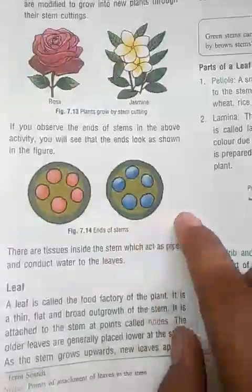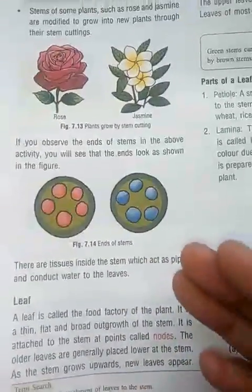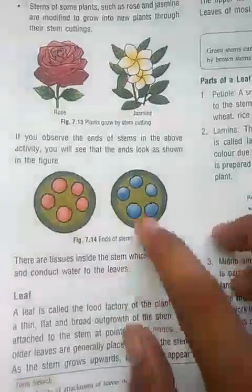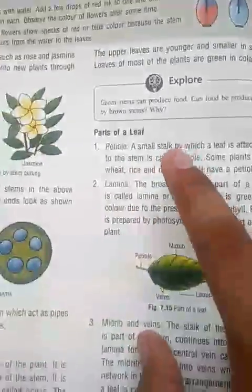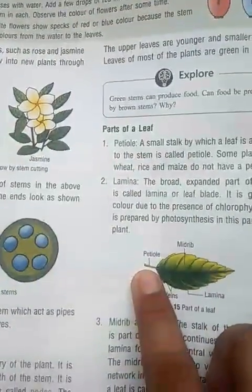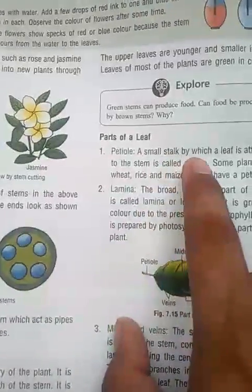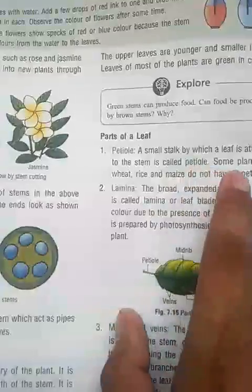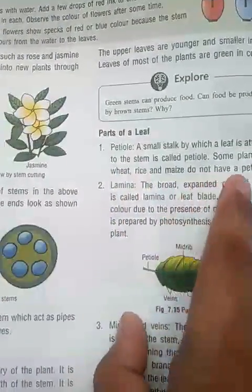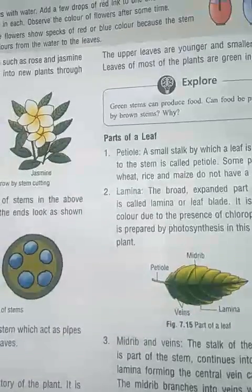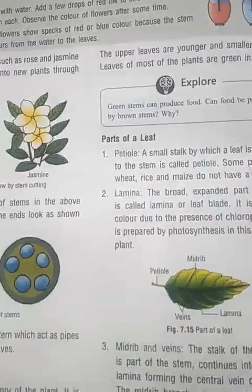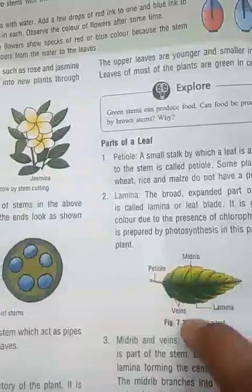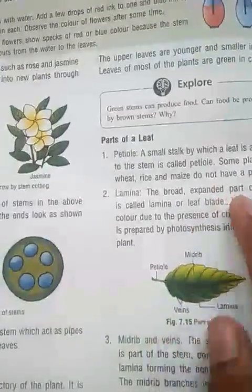When a plant's body grows, older leaves are positioned lower and new leaves grow outward at the sides. The parts of a leaf are: first is the petiole. The petiole is the small stalk by which the leaf is attached to the stem. Some plants like wheat, rice, and maize do not have petioles because their leaves are directly joined with the stem.